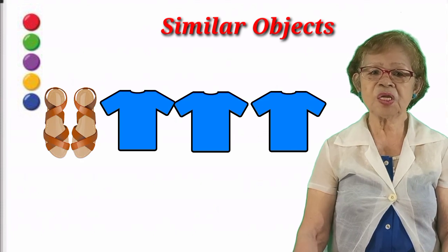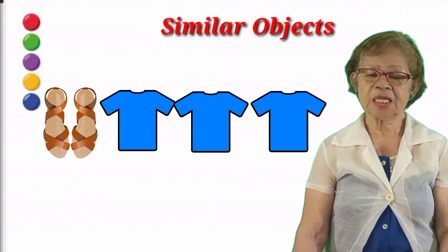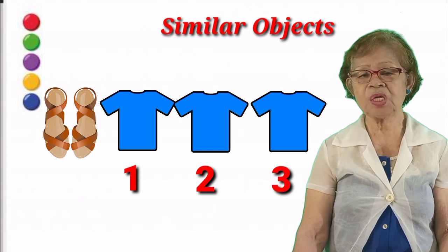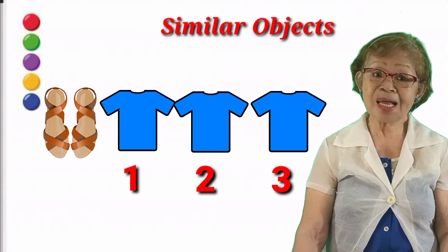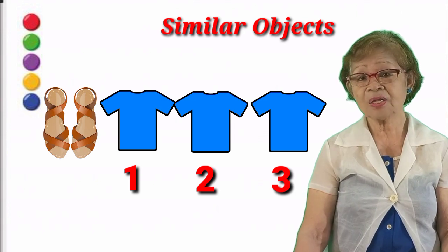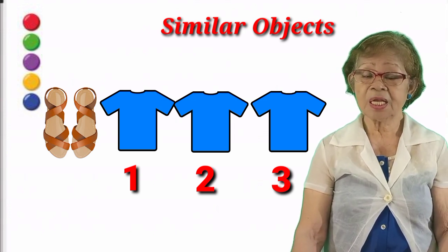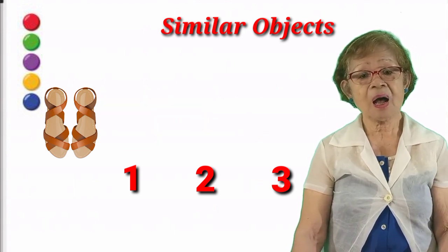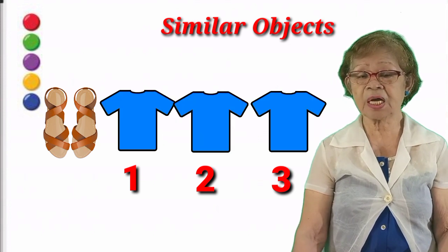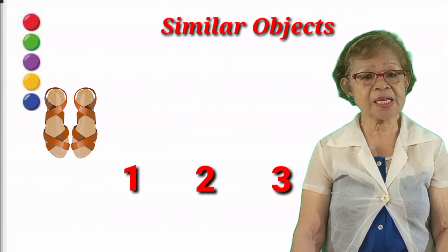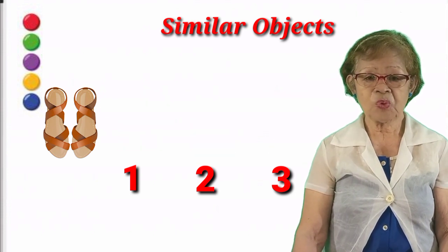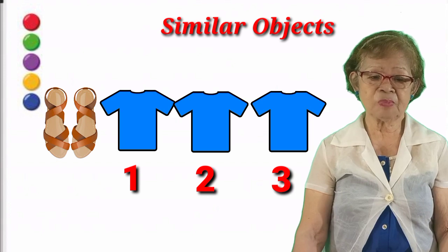Now let's go to another example. We find three blue shirts. Let's count the shirts: one, two, three shirts. But there is a red sandal, which is not similar with the three blue shirts. The three blue shirts are similar, but the sandal is not similar. So we are finished with our similar objects example.